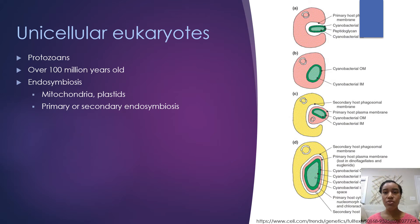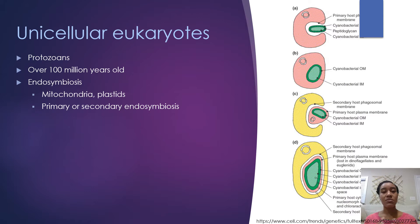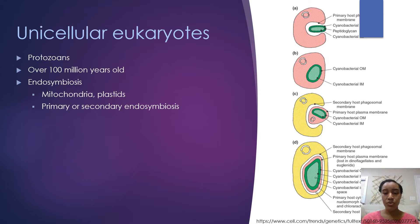Protozoans came about through a process called endosymbiosis, and this process is how we end up getting some of the organelles we have today, including mitochondria and chloroplasts. We're going to go through this image here to explain what the process of endosymbiosis is.